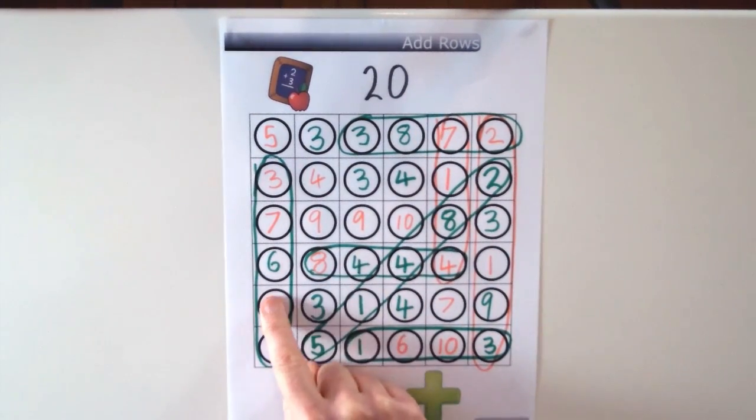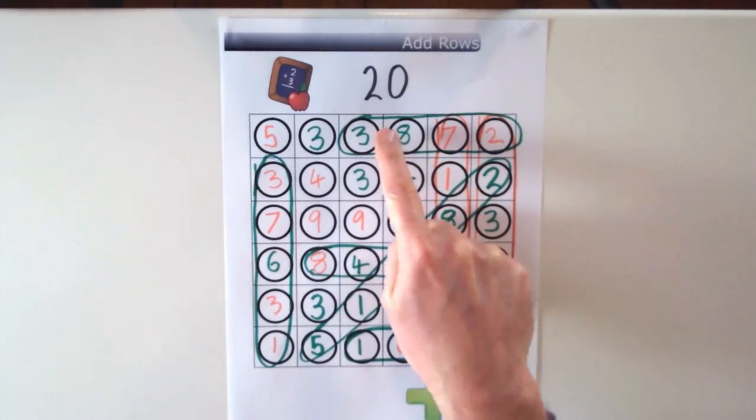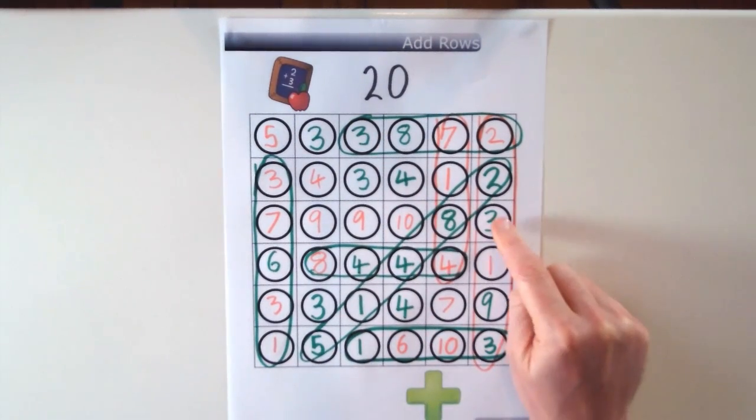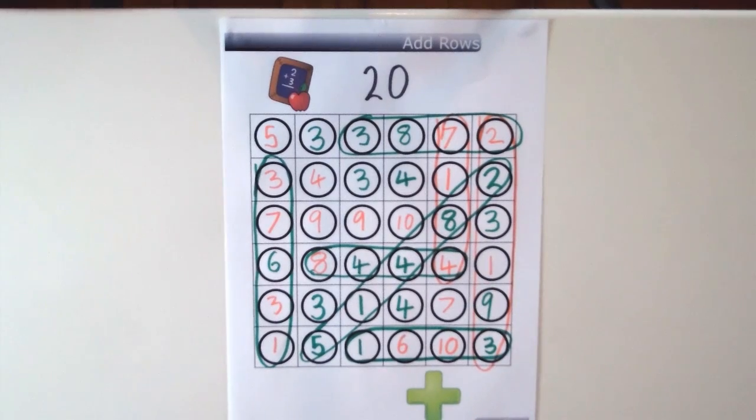So in this case green has 1, 2, 3, 4, 5 combinations and orange only has 1, 2 so green would be the winner.